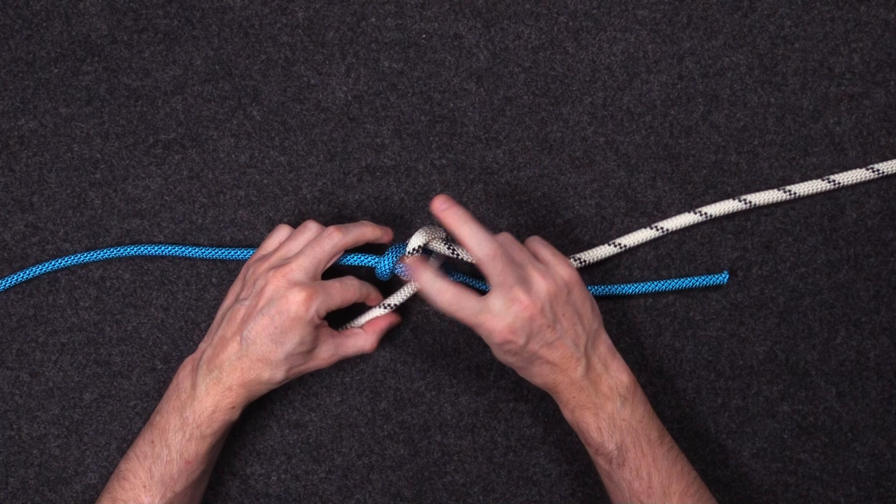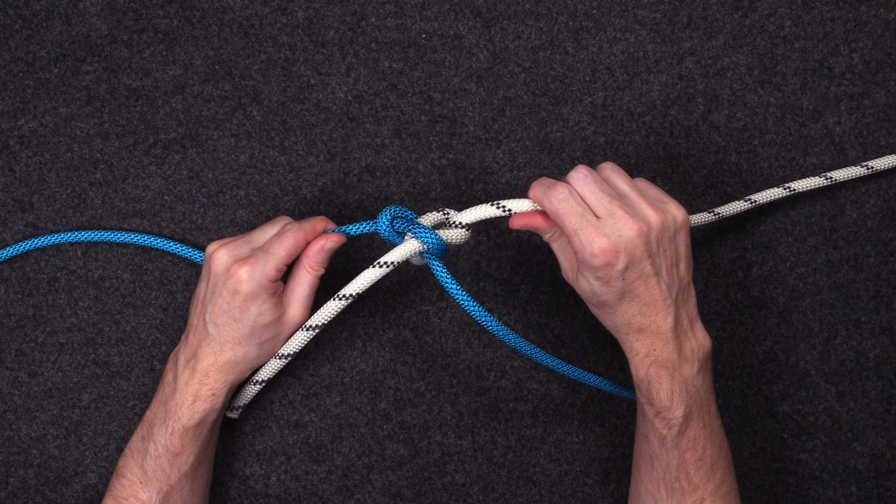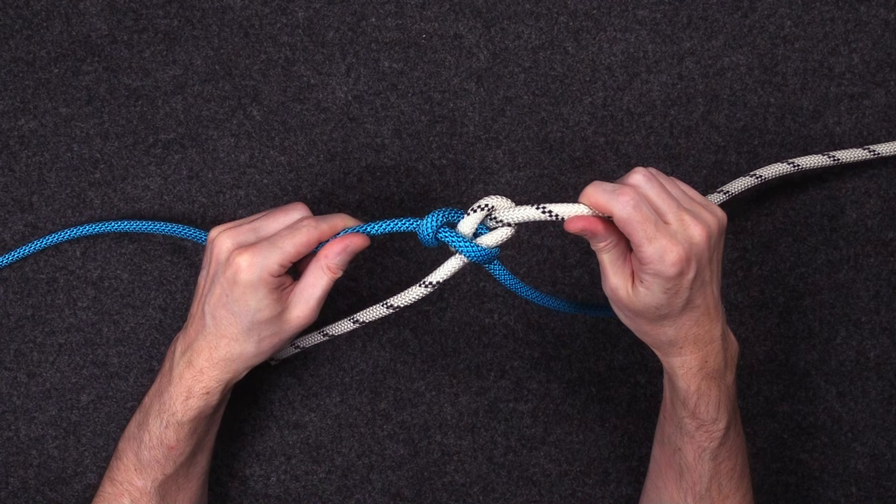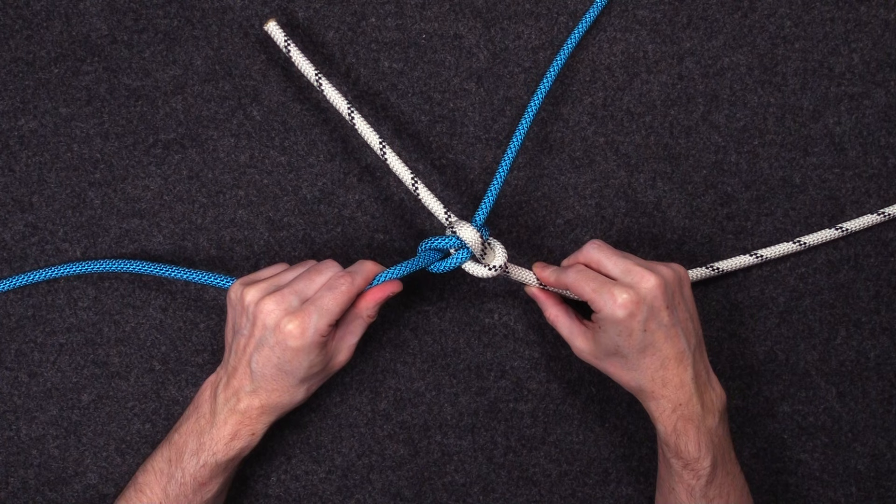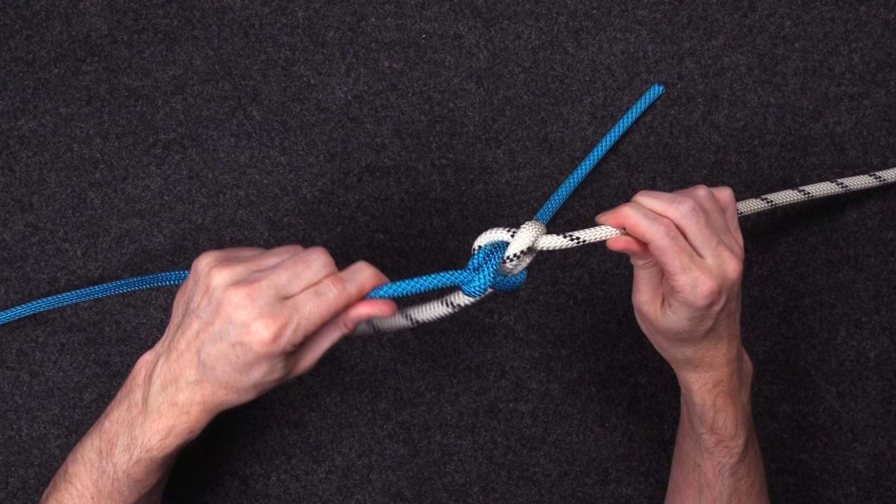So if we look at the Carrick Bend now, you can see this is what it looks like from the side. The top. Have a good look at that. The opposite side. Very symmetrical. But this is the version that is most secure.